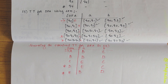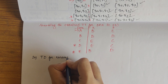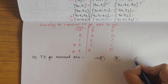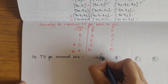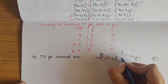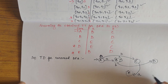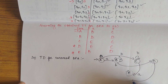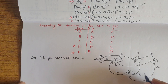Now we draw the transition diagram for the renamed DFA. A is the start state. A on A gives B; A on B gives C. B on A gives B itself; B on B gives D. C on A gives E; C on B gives C itself. D on A gives E; D on B gives C. E on A gives B; E on B gives D.